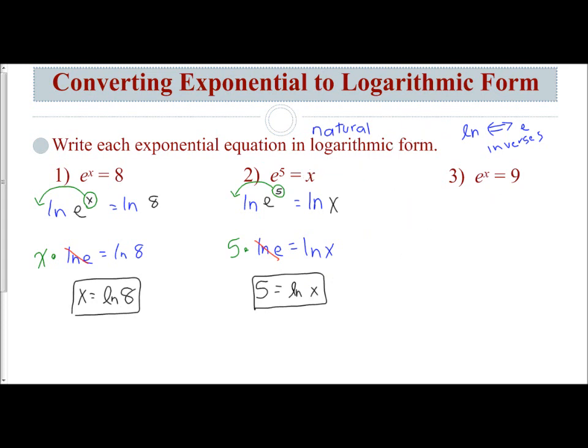Last example. I need to get the x out of the exponent, so I'm going to take the natural log of both sides. The natural log of e to the x power equals the natural log of 9. That allows me to take the variable out of the exponent and bring it down to make it the coefficient of my natural log. So x times the ln of e equals the ln of 9. The natural log of e is 1, so it just cancels out.